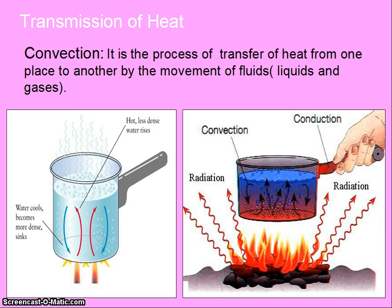Convection. It is the process of transfer of heat from one place to another by the movement of fluids. When we boil water in a pan, the water at the bottom of the pan gets heated and travels towards the surface of the water, while the cold water on the surface travels to the bottom of the pan. This is known as convection. Liquids and gases are known as fluids.